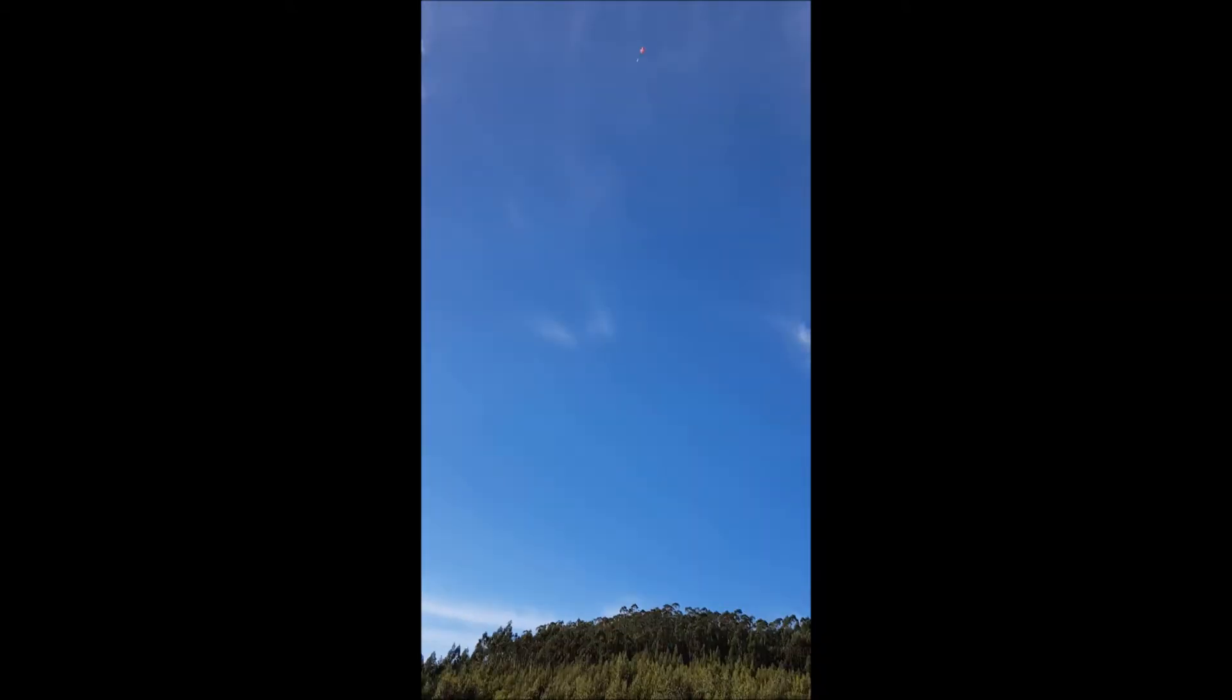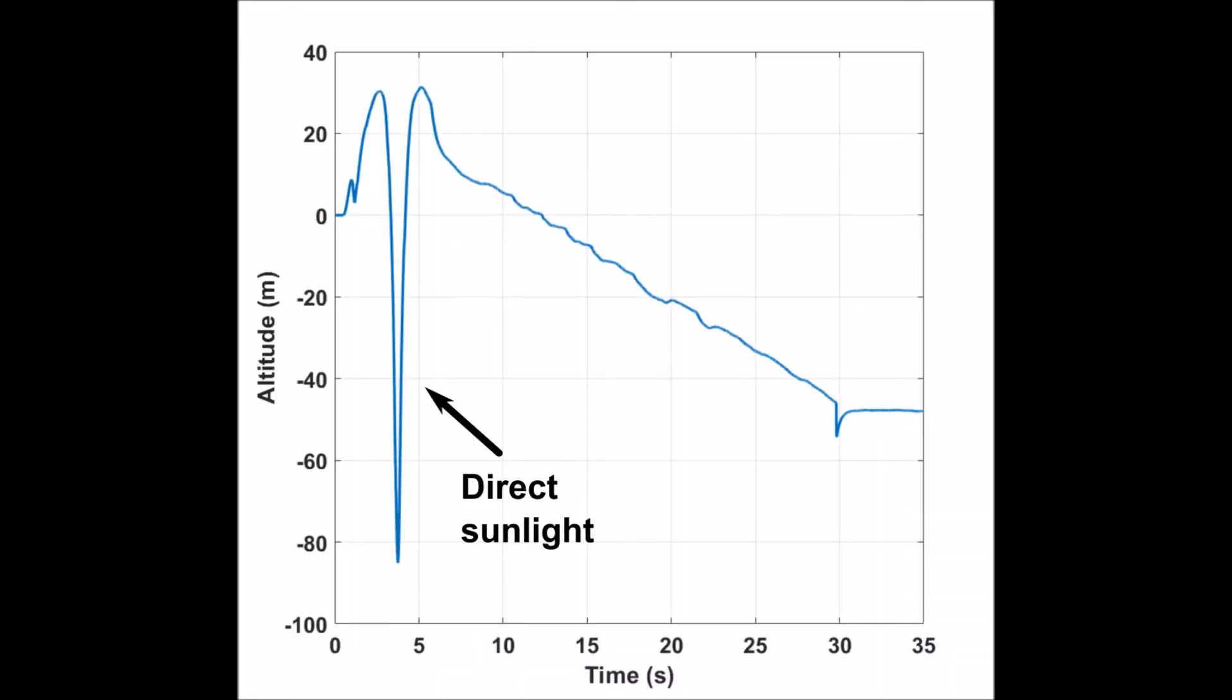Unfortunately, I stopped filming after the parachute opened. The controller calculates altitude from pressure measurements. When there is direct sunlight shining on the pressure sensor, this one yields wrong readings. There is also an offset cancellation problem that I fixed in the code later.